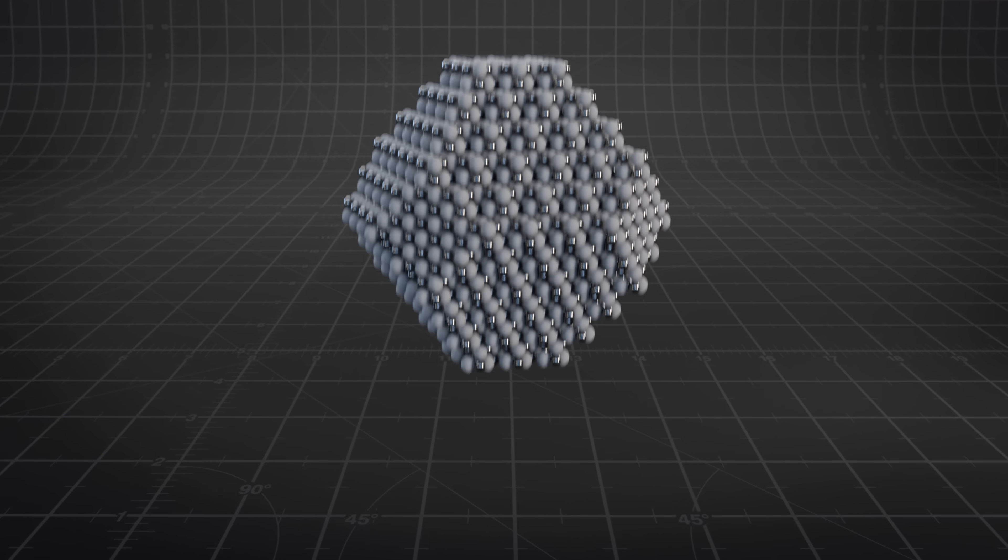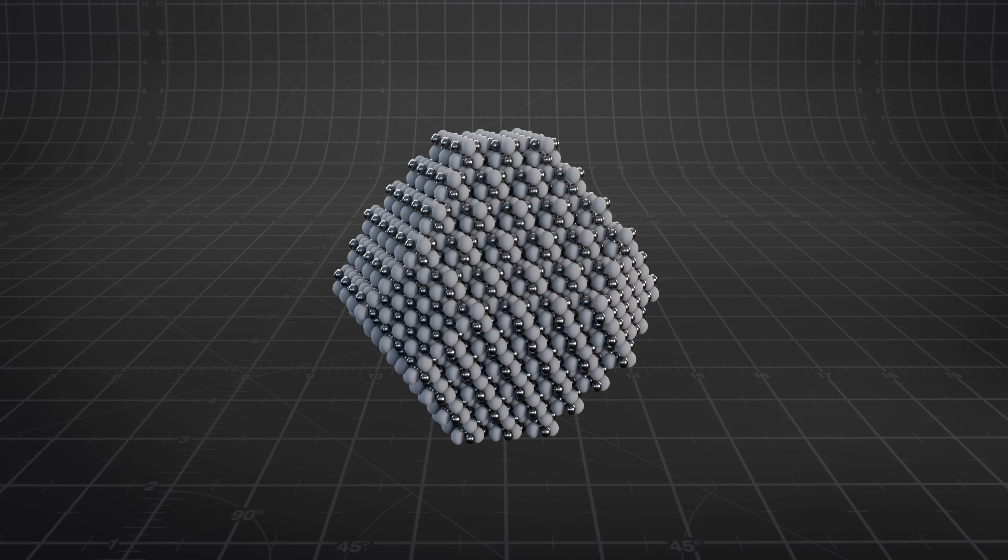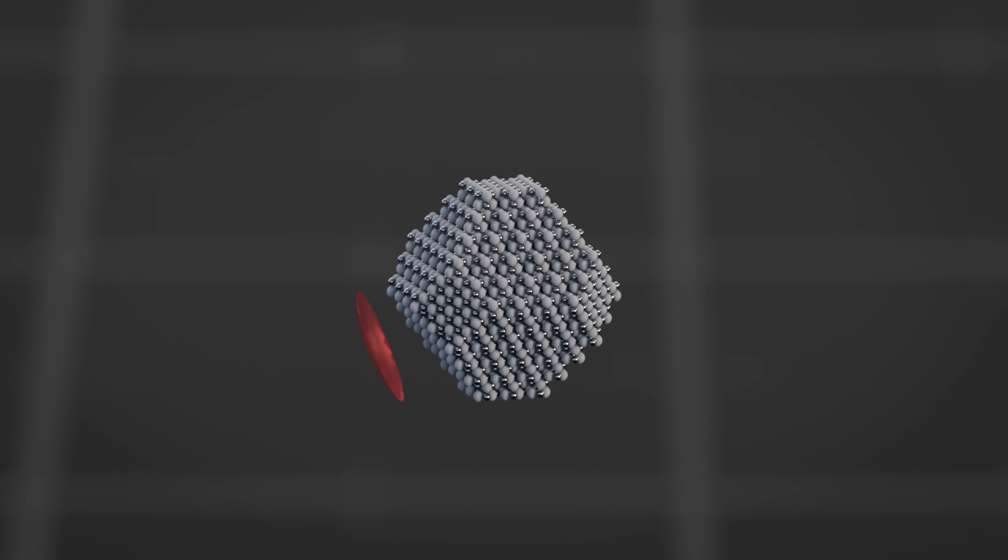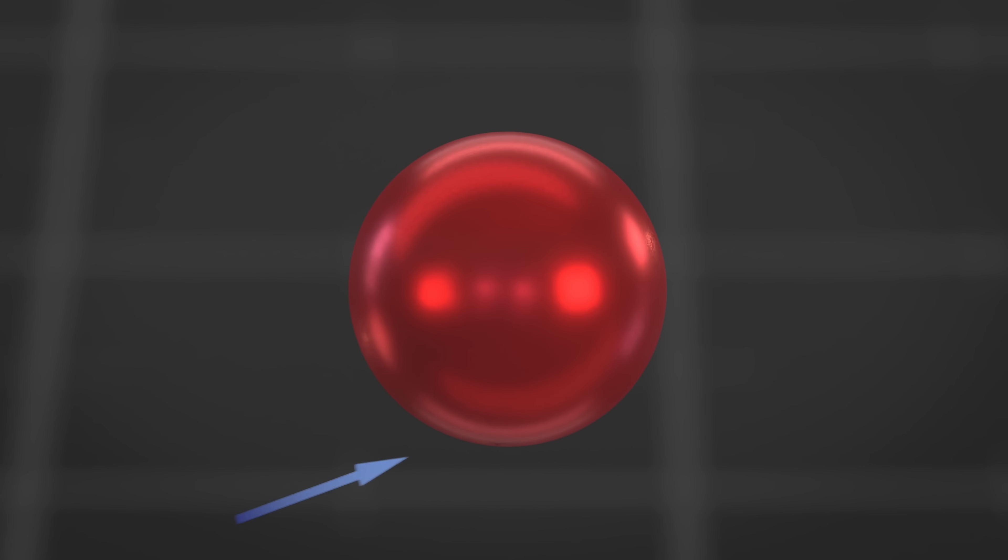To understand how this works, imagine light, or in other words a photon, hitting our quantum dot. The energy of this photon excites an electron inside the quantum dot, making it jump to a higher energy level, and then after a while this electron will fall back into its former lower energy level, which in return releases energy in the form of a new photon.